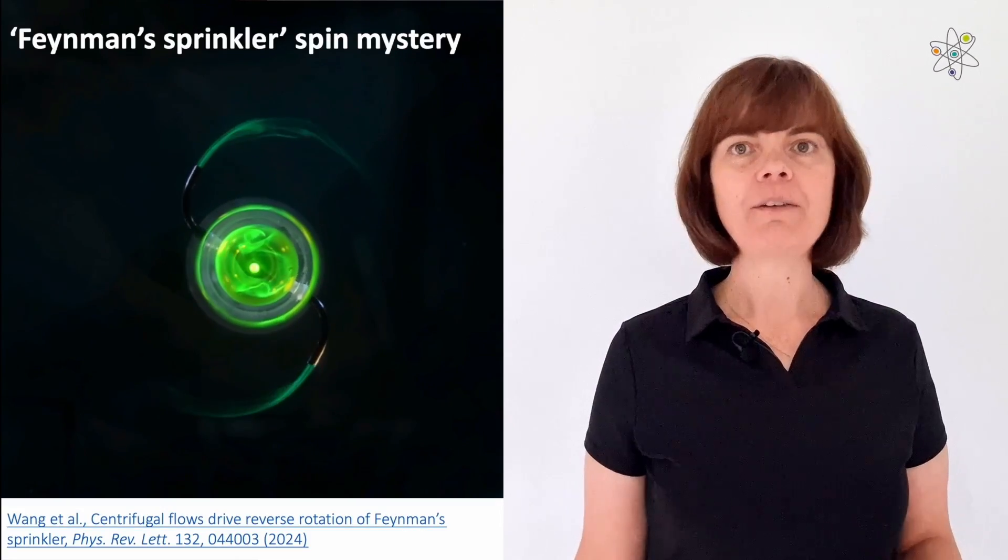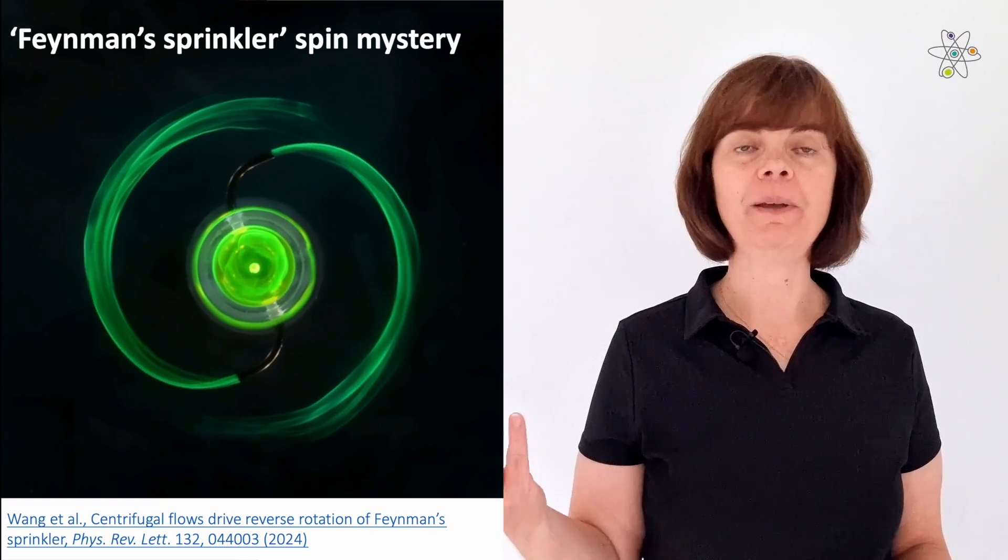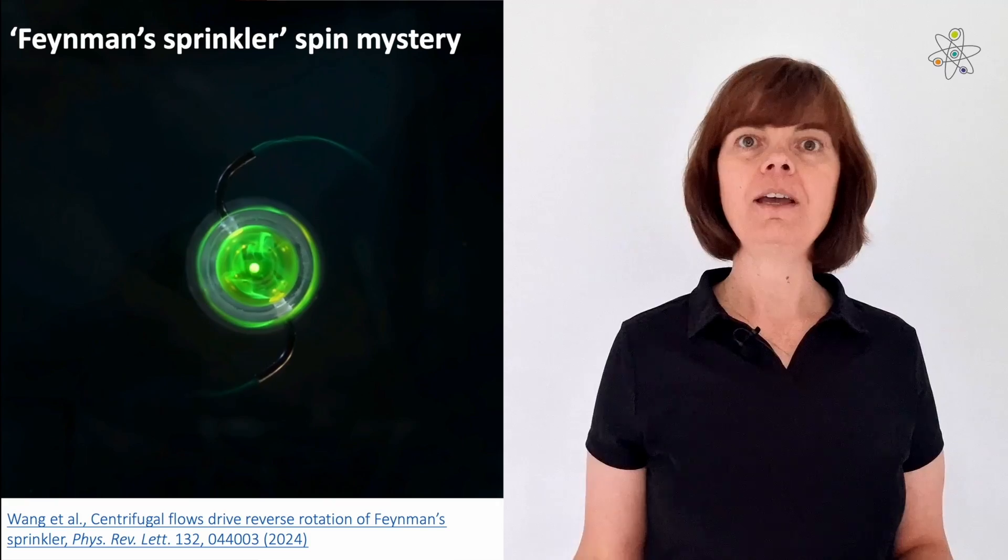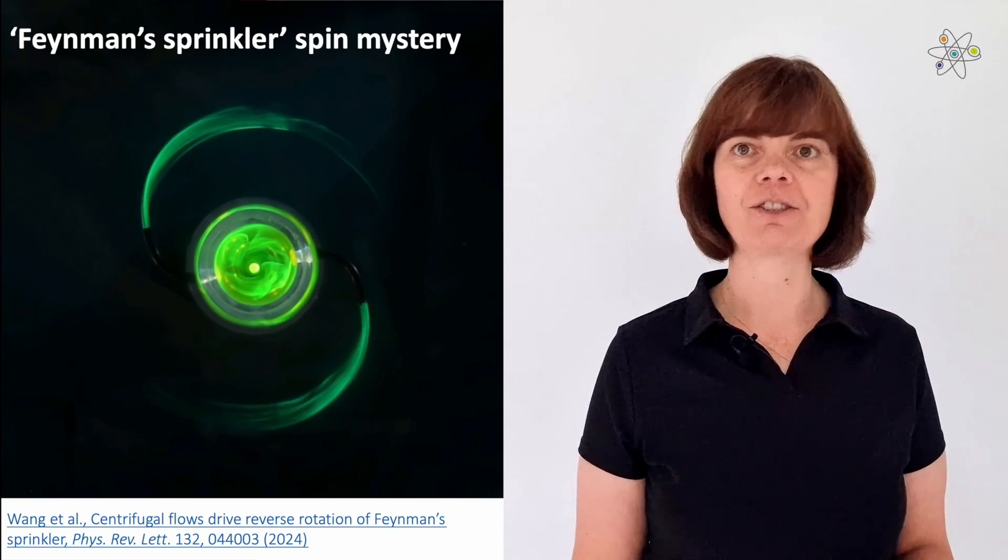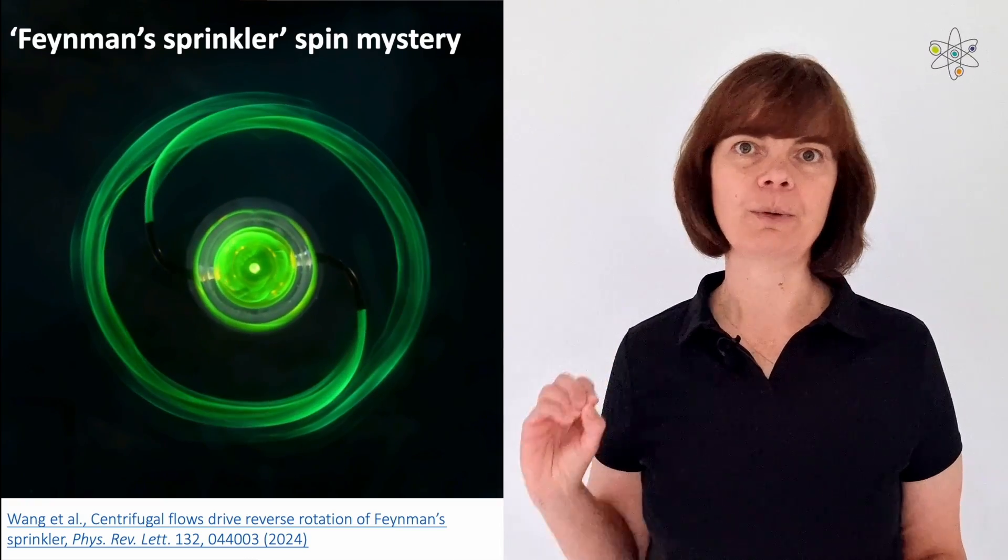The problem is this. You have an S-shaped lawn sprinkler, so an S-shaped pipe on a pivot, and the water squirts out at right angles to the axis and makes it spin in a certain direction. Everybody knows which way it goes round. It backs away from the outgoing water.